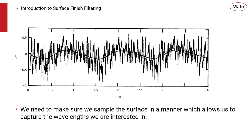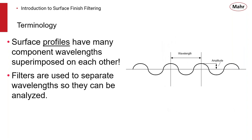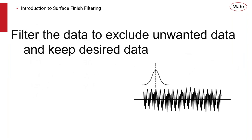When we sample the surface, we must do so in a manner that allows us to capture the wavelength we are interested in. A surface has a waviness component, and we want to pick out the part that gives us the best information about just the roughness. Profiles have different components imposed upon them, and filters are used to separate the wavelengths so they can be analyzed — excluding the unwanted data and keeping what's important to our analysis.